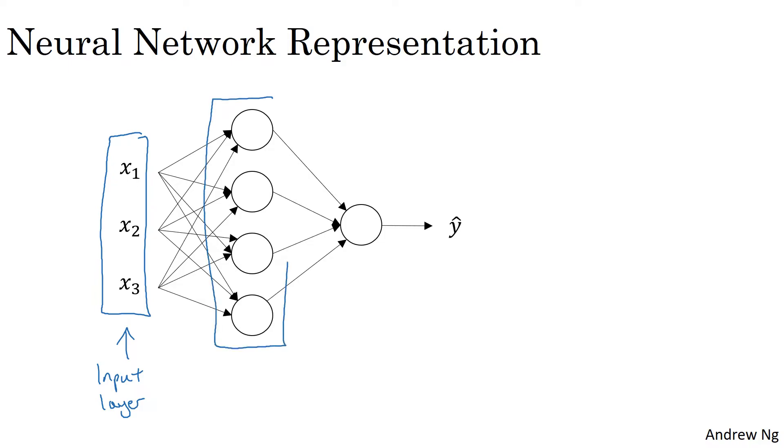Then there's another layer of circles. And this is called a hidden layer of the neural network. I'll come back in a second to say what the word hidden means. But the final layer here is formed by, in this case, just one node. And this single node layer is called the output layer. And it's responsible for generating the predicted value, y hat.